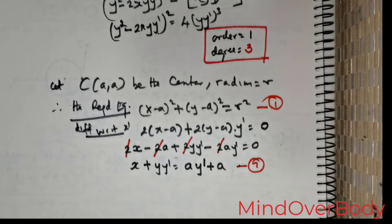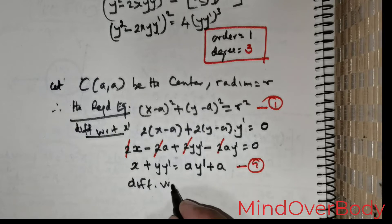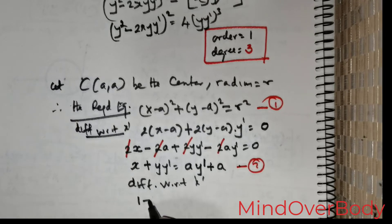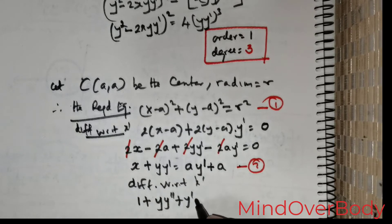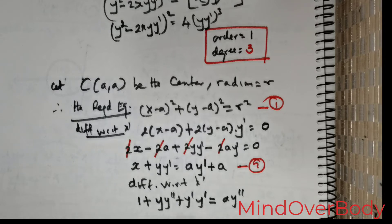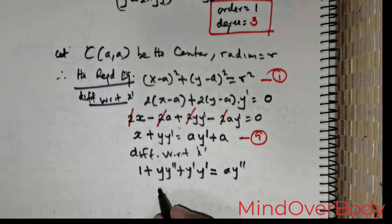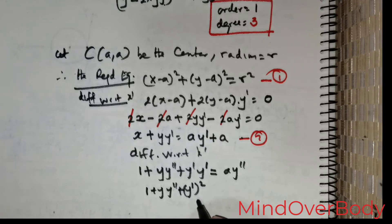Differentiating equation 2 again with respect to x: 1 + y·y'' + (y')² = a·y''. Solving for a: a = (1 + y·y'' + (y')²)/y''. Call this equation 3.